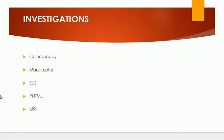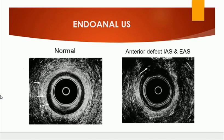A number of investigations can be helpful to assess anal incontinence, including colonoscopy, manometry, endoluminal ultrasonography, and MRI. In endoanal ultrasonography, we can see the normal structure of the lower end of the anus with the sphincters, and we can identify anterior defects of the internal as well as the external sphincter.